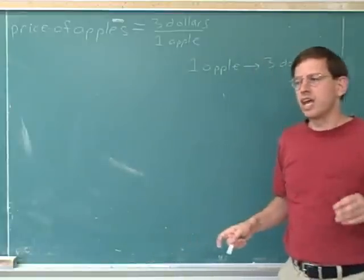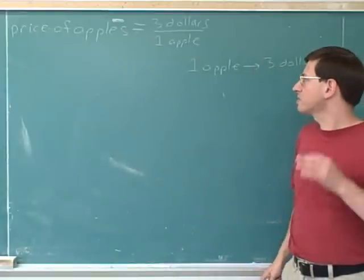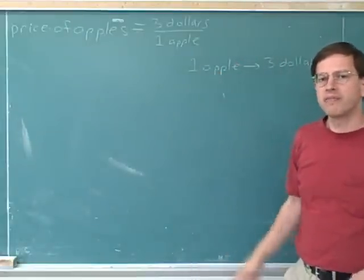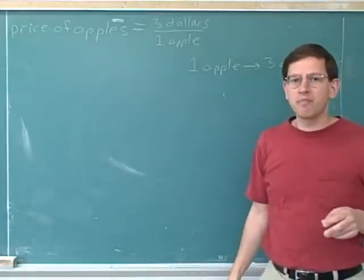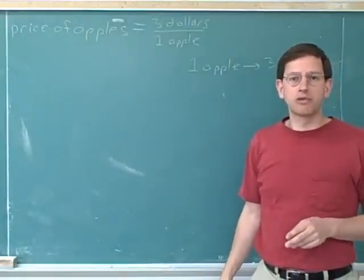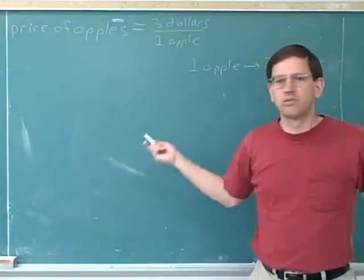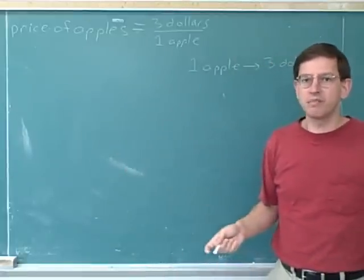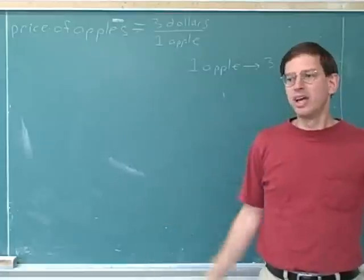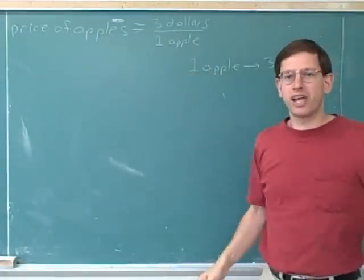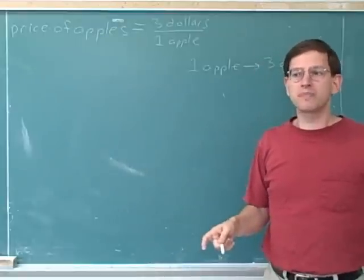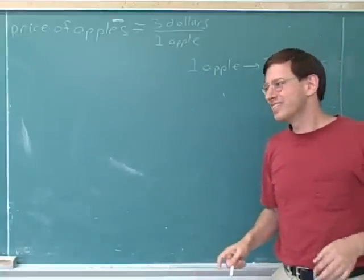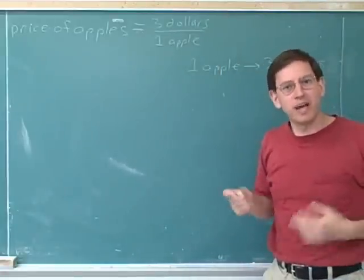Now let me point something out. If I tell you that the price of apples is three dollars per apple, that means that if you bought one apple it would cost you three dollars. But if I tell you the price of apples is three dollars per apple, does that mean that you actually bought exactly one apple? Well, no. You might have bought two apples, four apples, or 40 apples, or it's totally possible that you didn't buy any apples. You might have gone to the store and said three dollars per apple — that's ridiculous — and then bought no apples.